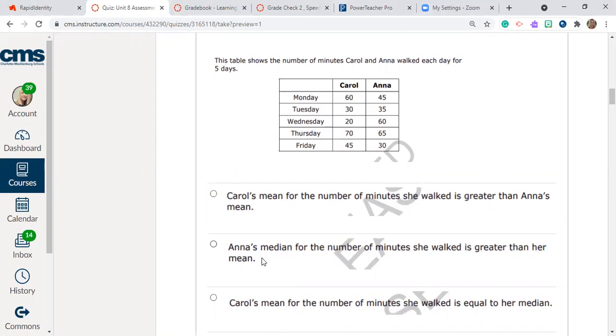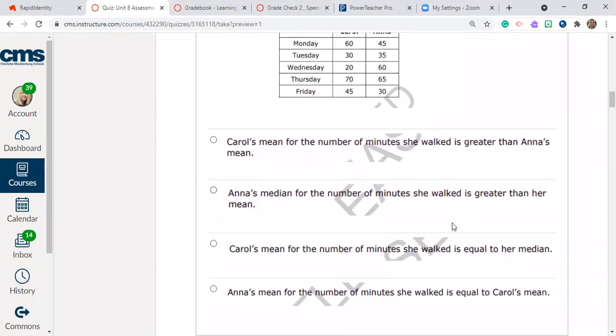Okay, the next answer choice says Anna's median for the number of minutes she walked is greater than her mean. Well now we need to find the mean or the median, I'm sorry. So find the median for this set of data and find the median for this set of data. Okay next choice Carol's mean for the number of minutes she walked is equal to her median. Anna's mean for the number of minutes she walked is equal to Carol's mean. You're going to select the one of these that is true after you have done the work.